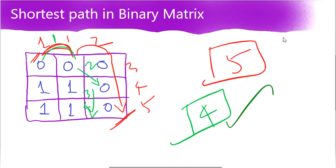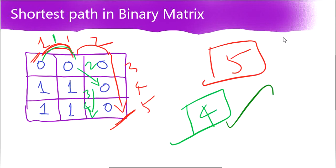How are we going to approach this algorithm? If you remember, we have already solved a very similar problem on our channel: Path with Minimum Effort. Whenever I see a word 'matrix,' the first thing that hits me is BFS, so I am going to solve this problem using BFS only.